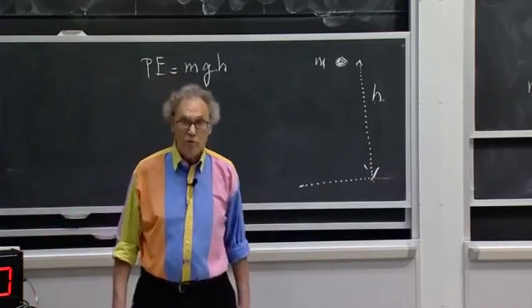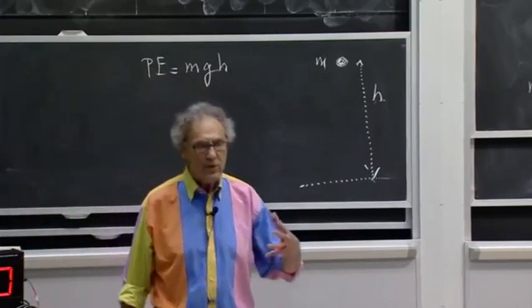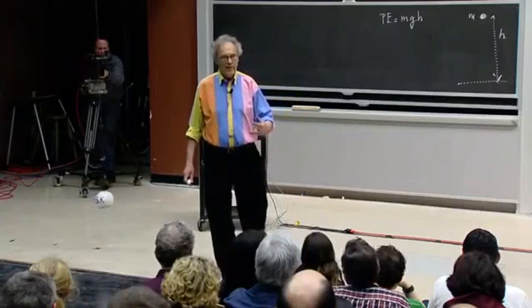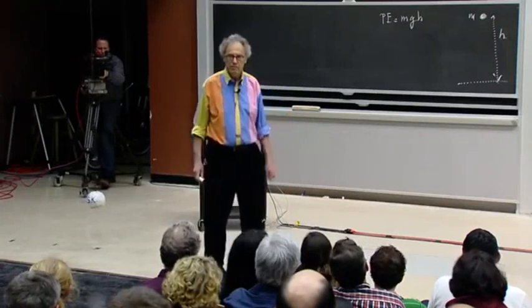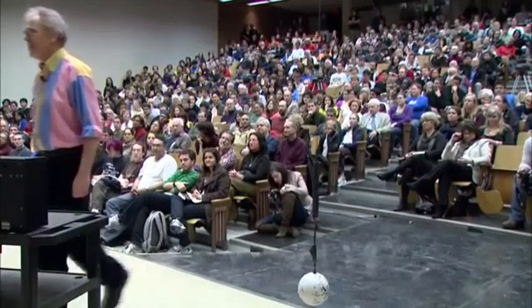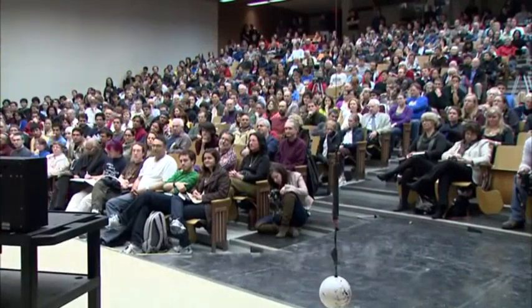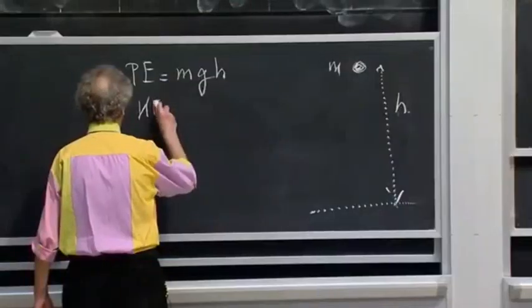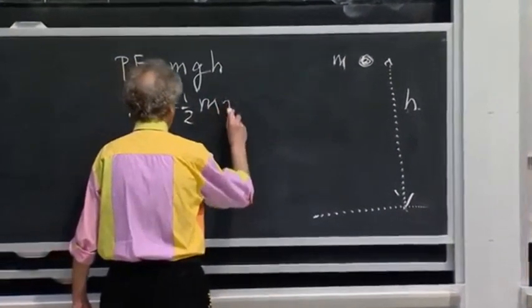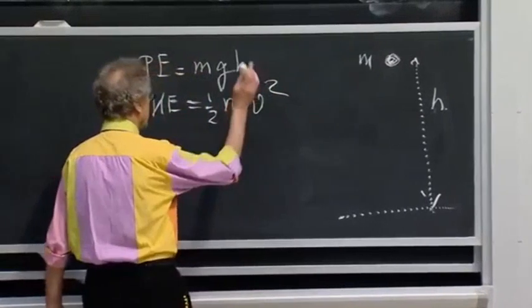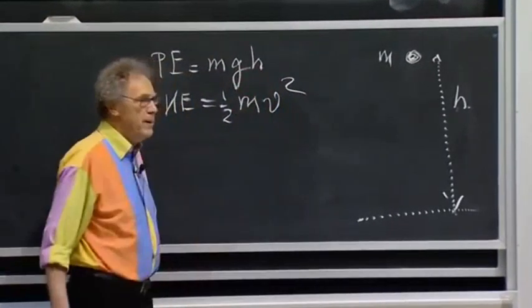As the object goes down, it picks up speed. And we associate with speed energy, which we call kinetic energy. And the kinetic energy of an object with mass m is one-half mv squared. m is the mass and v is the speed of that object.